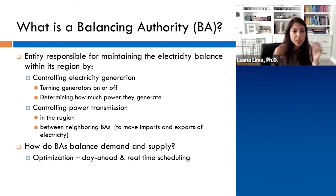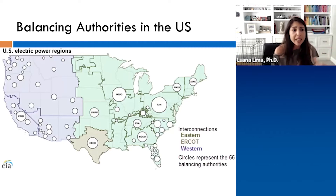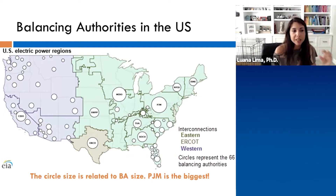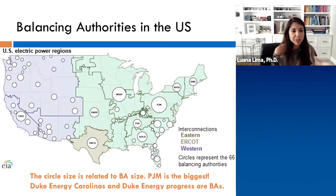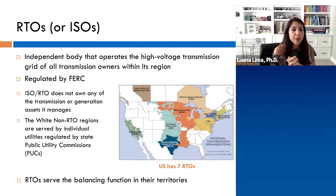They usually use a two-settlement approach: the day-ahead and real-time scheduling. In the US, we have three big interconnections and a total of 66 balancing authorities. The circle size on the map relates to BA size — PJM is the biggest. Duke Energy and Duke Energy Progress are also balancing authorities. The other agents mentioned are the RTOs or ISOs, which are regulated by FERC.